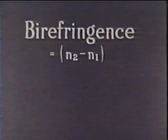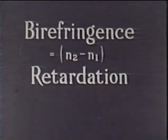The difference between the two refractive indices is called the birefringence. The retardation produced by a crystal section is proportional to the birefringence and the thickness.